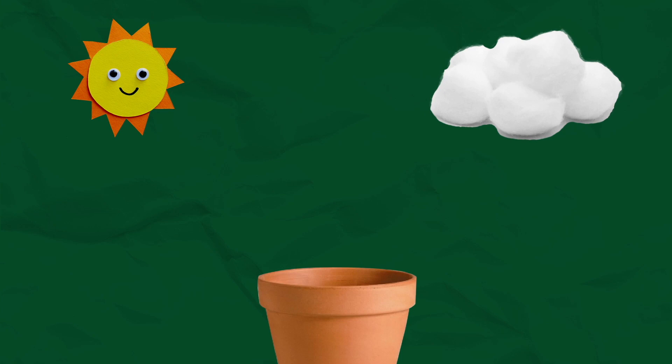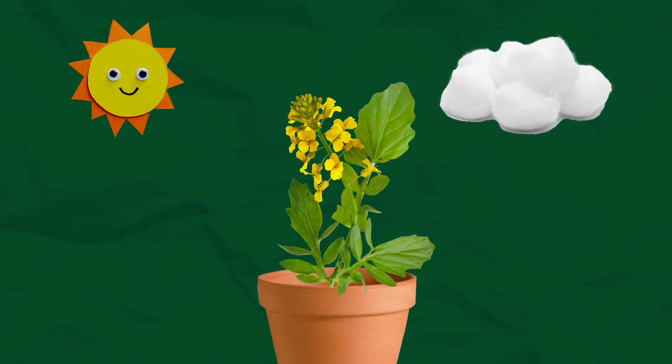I was in class eight or nine. There was one science exhibition. So in that I took one mustard life plan and then I explained it, how it was working, how it with photosynthesis, how it made the fruit, how it grows like that.